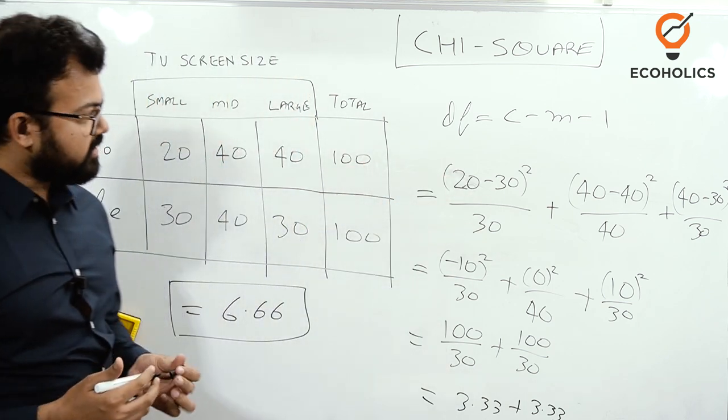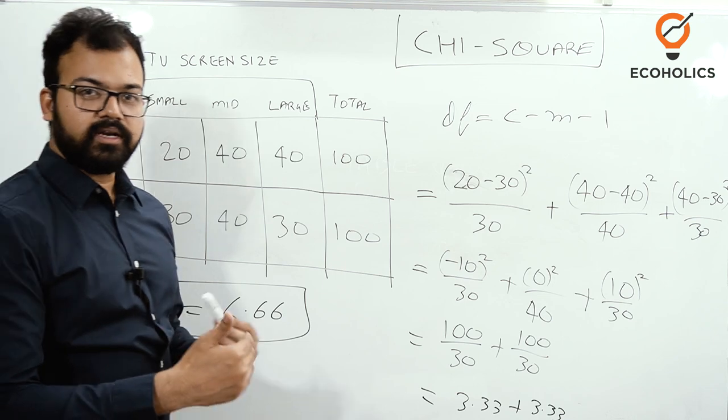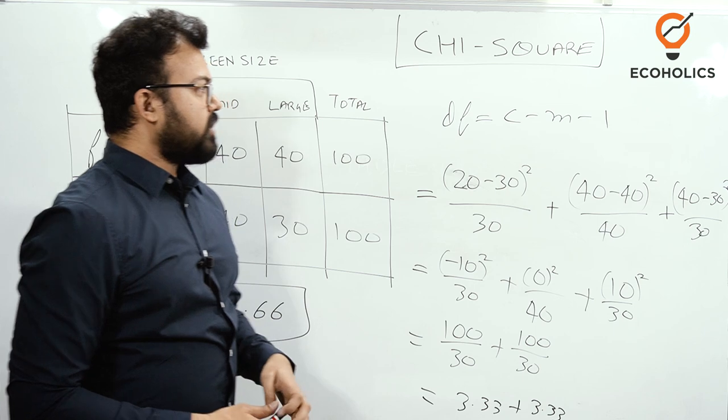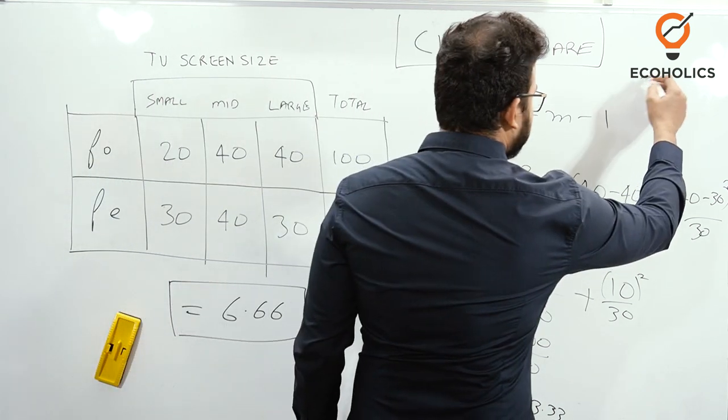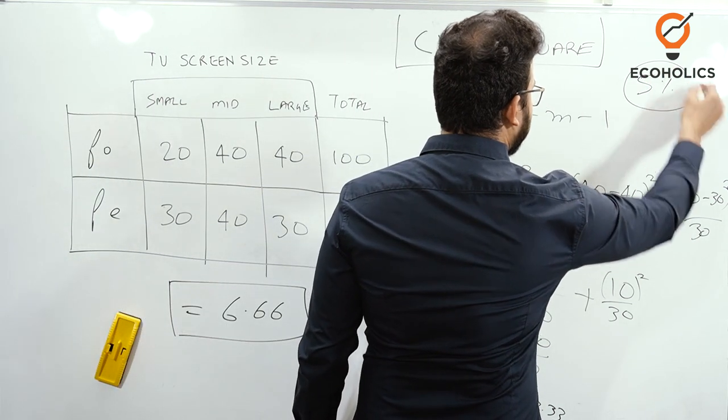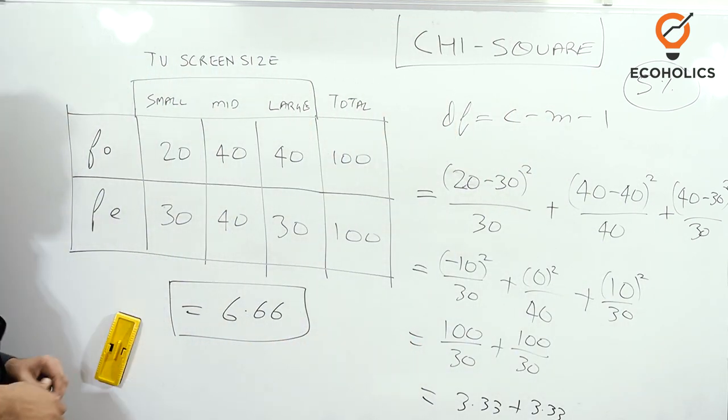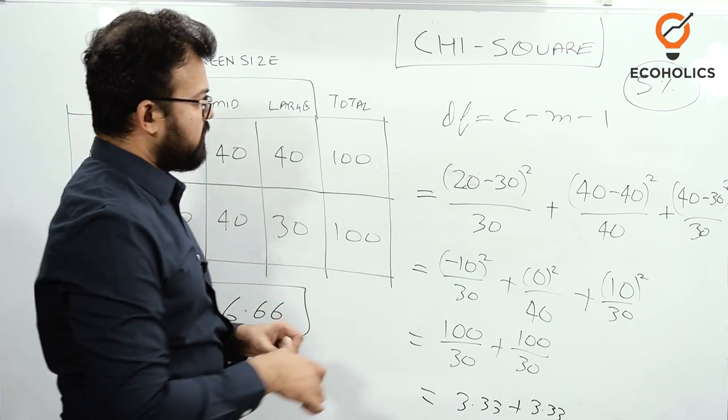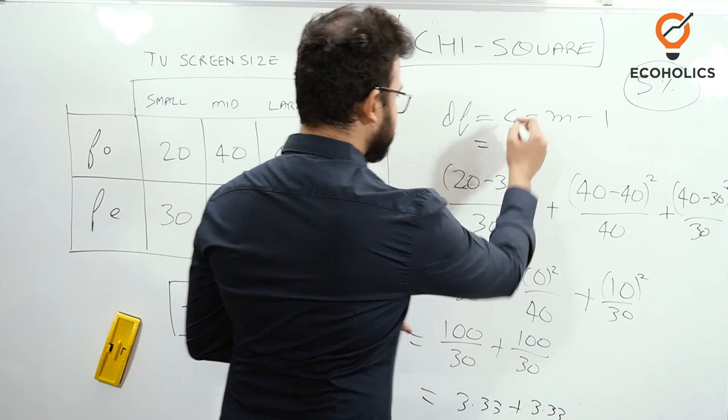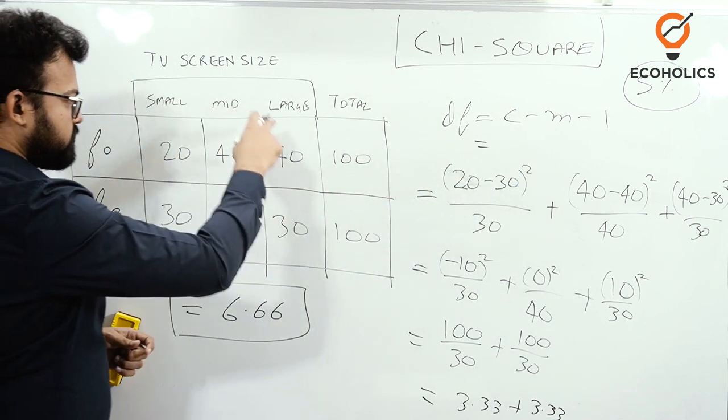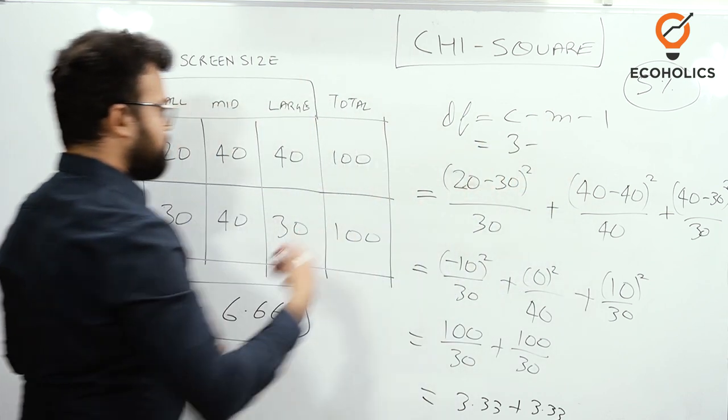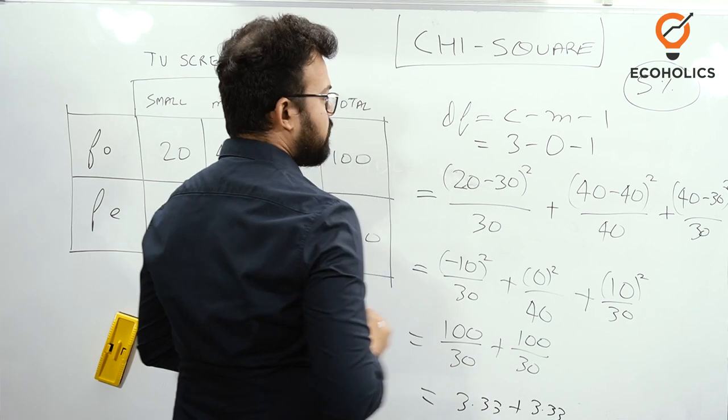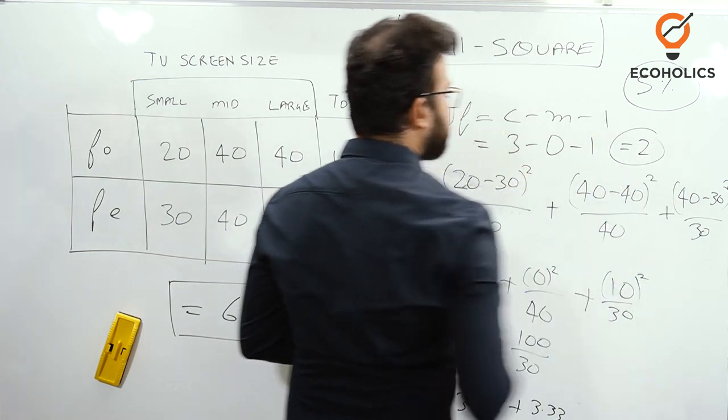Degree of freedom is c minus m minus 1. This is how we calculate degrees of freedom. This means that the data allows to move in that particular domain or range. At the 5% level of significance, we are checking this data of chi-square. We are looking if the expected and observed frequencies are equal. C is number of columns, so one, two, three. M is the population, so we don't know the population, we write 0 minus 1. So this is equal to 2.